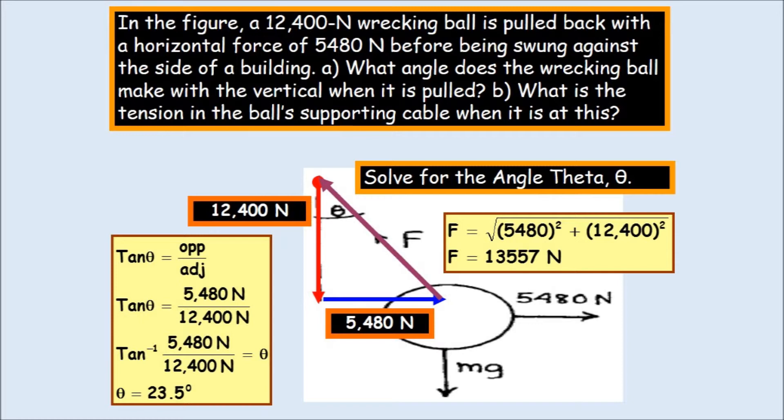We know the red line. The red line is the weight, 12,400 Newtons. Why do we use all of it? Why don't we divide it? Because there's only one cable holding the ball. That's the purple line. That's going to be only one cable. So the vertical is going to be 12,400 Newtons divided by one, which is 12,400 Newtons. And then the force pulling it back is going to be 5,480 Newtons. Mg is just the weight of the ball, which is 12,400 Newtons.